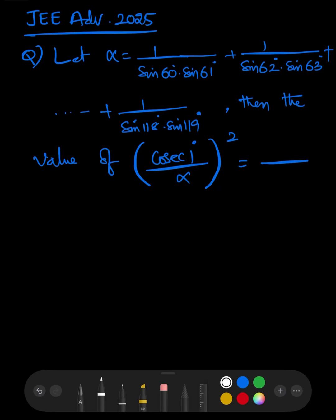Hi students, today we will discuss a problem on trigonometry which is given in JEE Advanced exam 2025 Paper 2. The question is: let α = 1/(sin 60° · sin 61°) + 1/(sin 62° · sin 63°) + ... and so on, up to 1/(sin 118° · sin 119°). Then we need to find the value of cosec²(1°) / α².